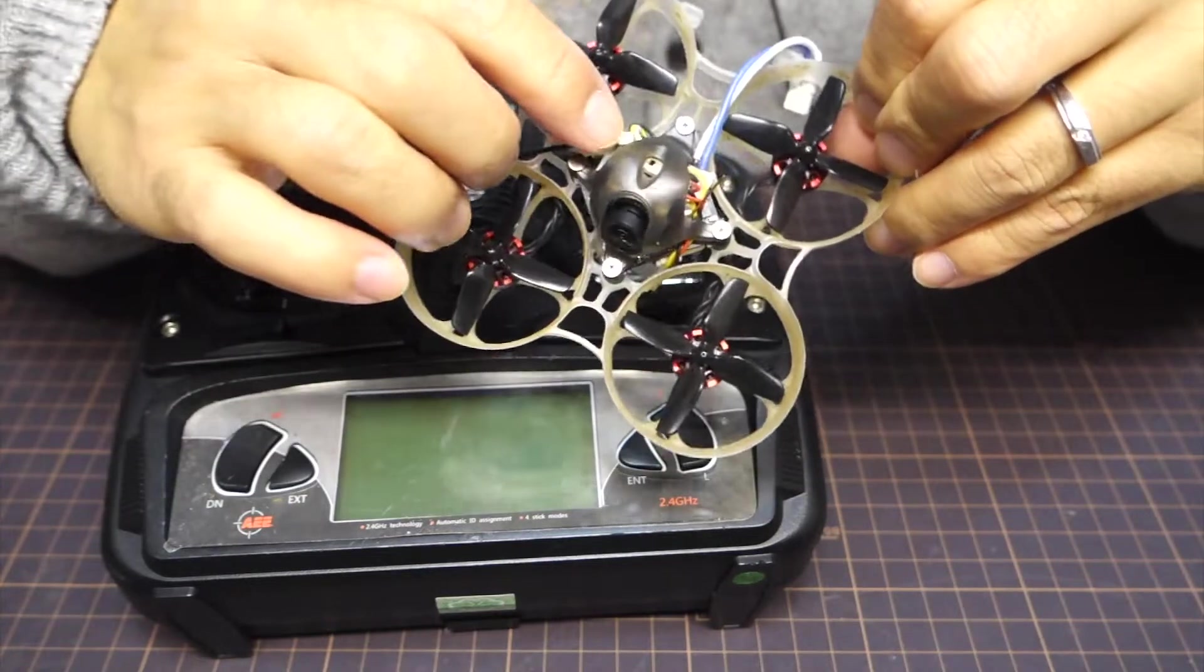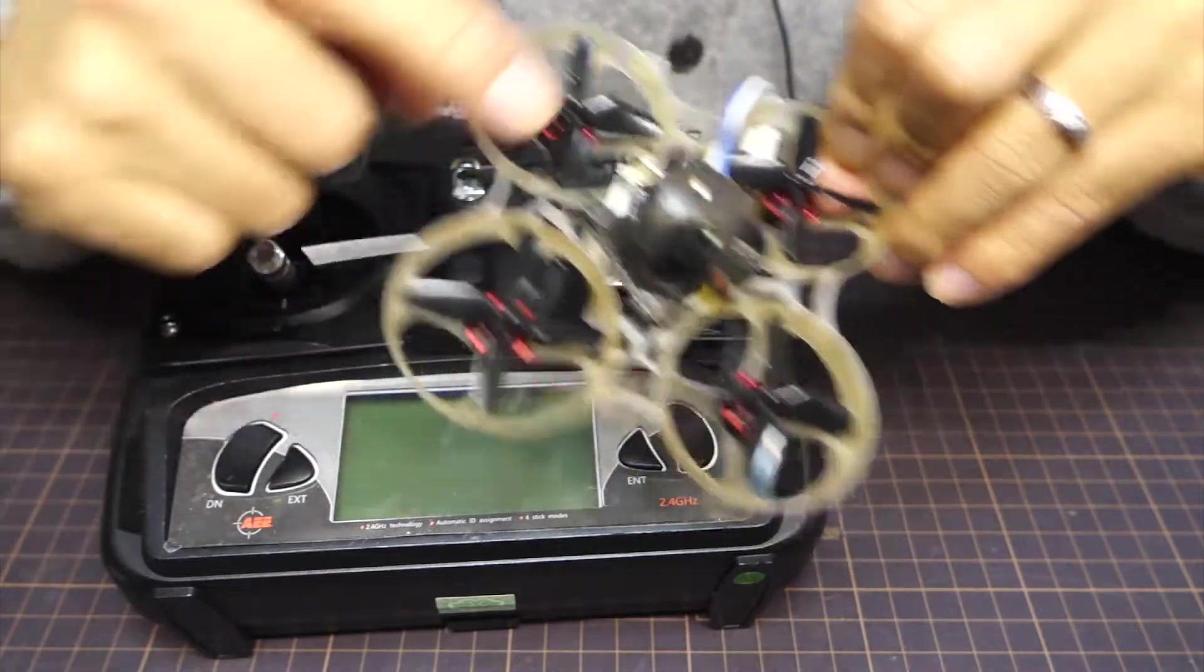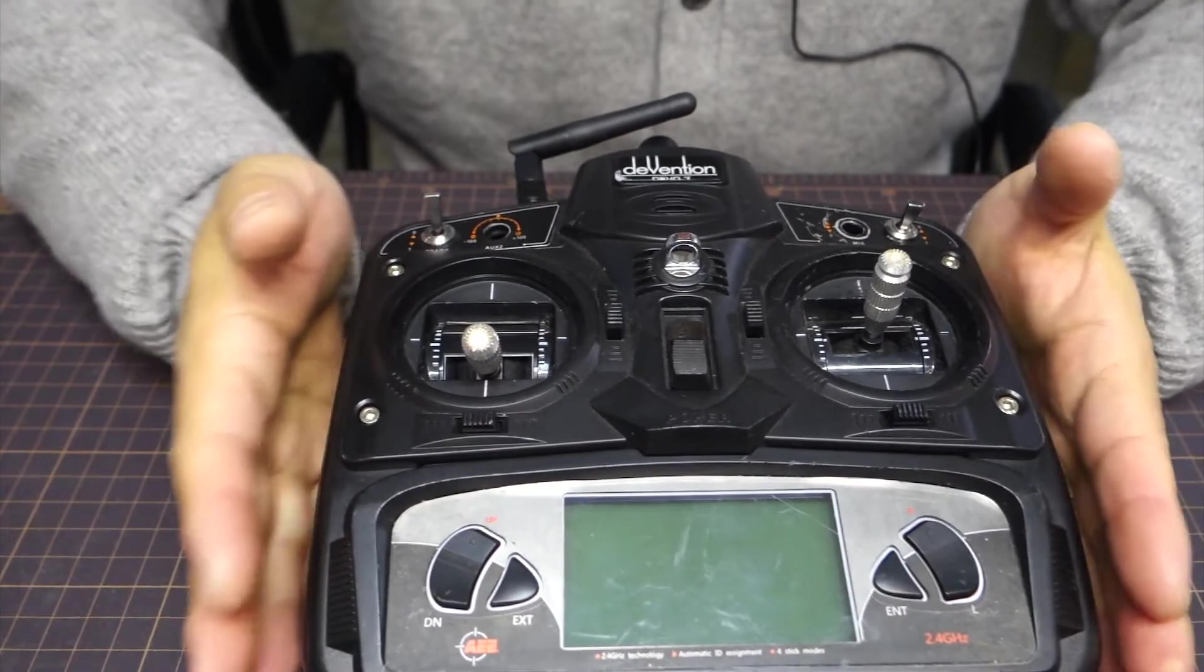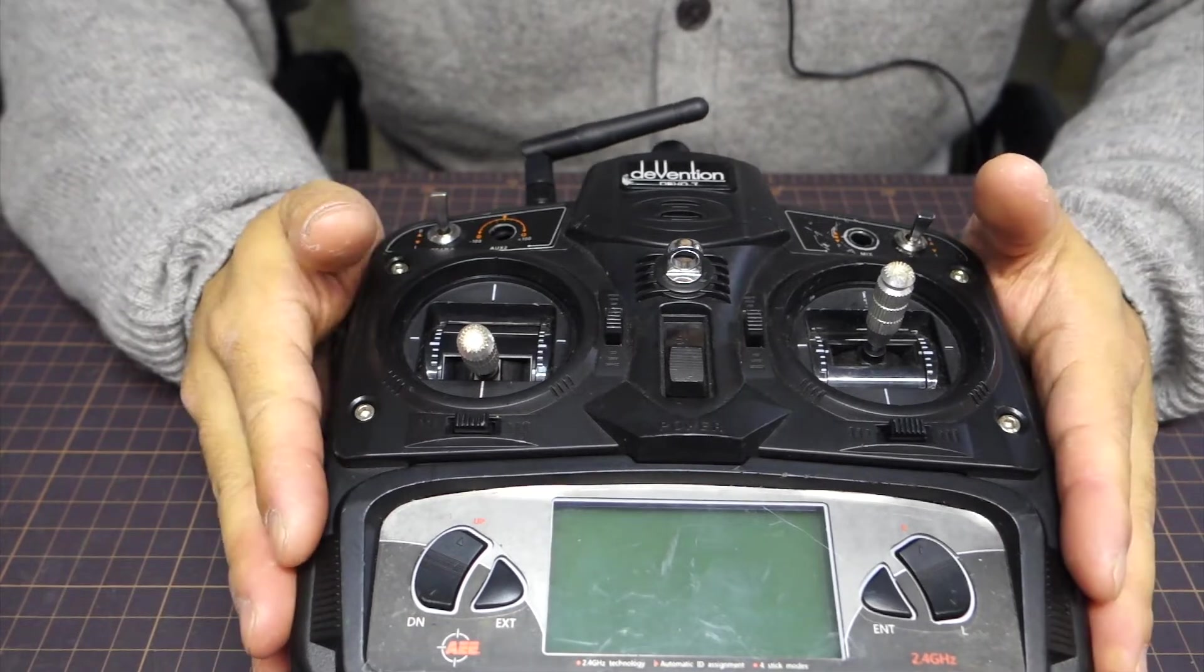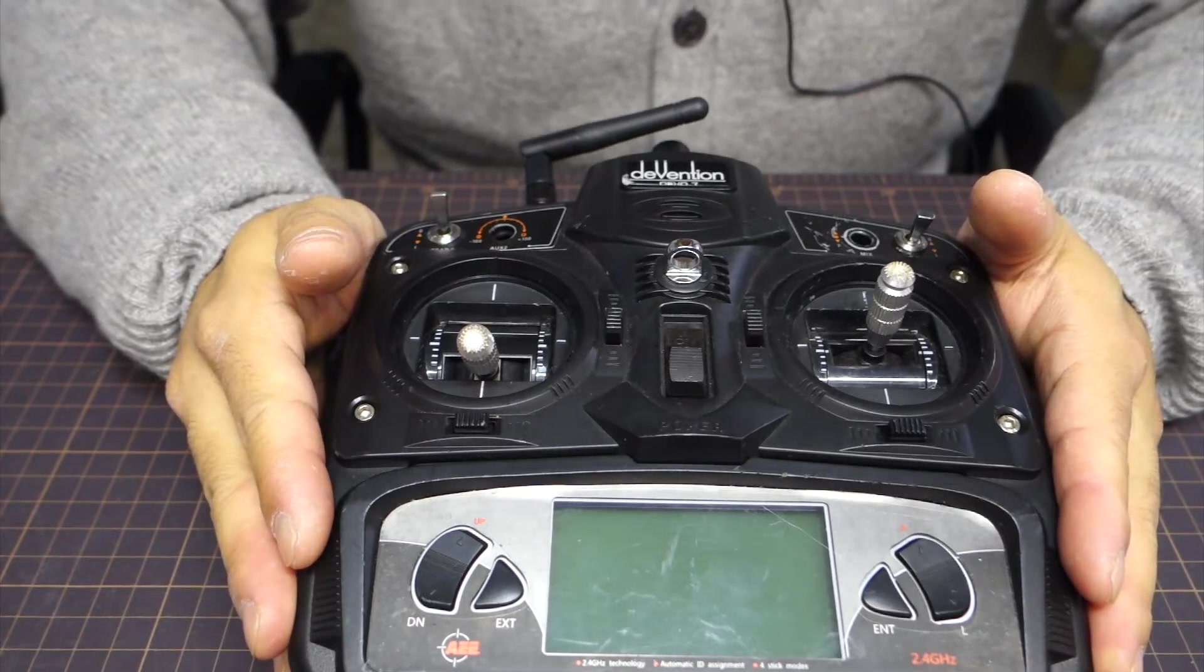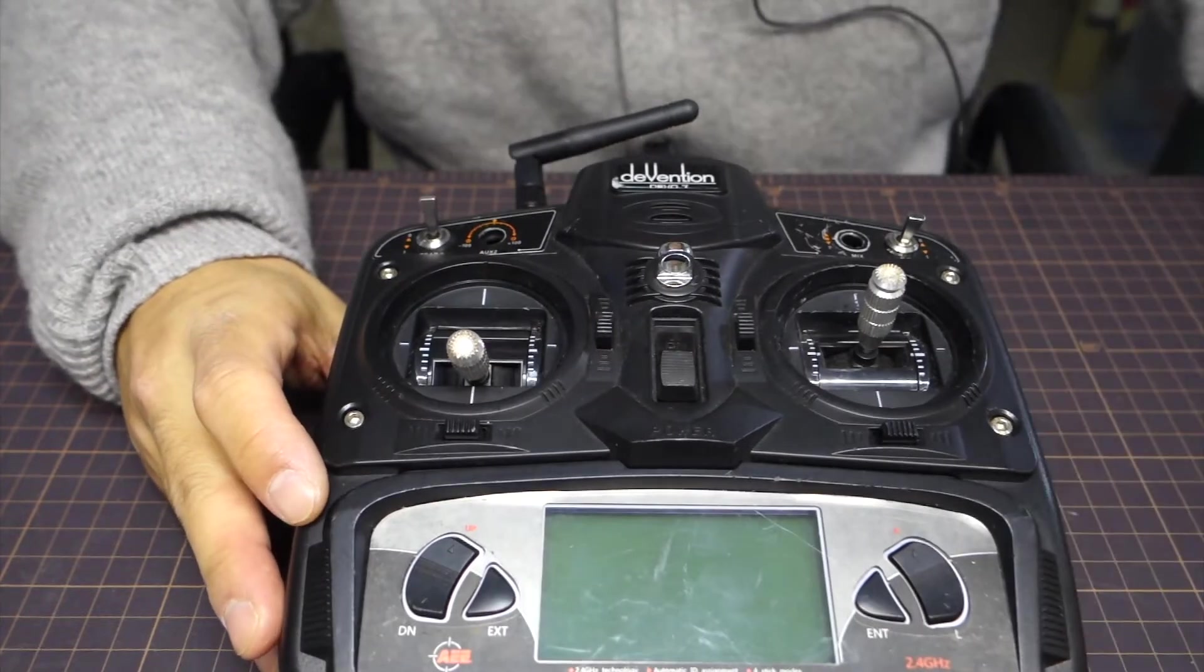This is my Mobil 7 with the ELRS receiver, and this is my DIVA 7. Today I'm going to show you how I modified my DIVA 7 with the internal ELRS module and bind it with my ELRS receiver in the M7.